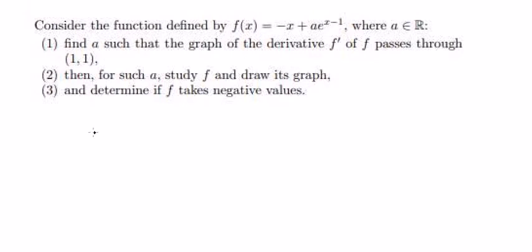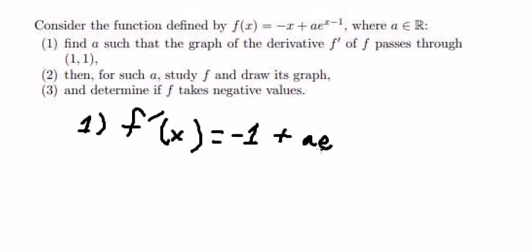First, we need to find the first derivative of the function. So we get negative 1 and we have a e to the power of x minus 1.